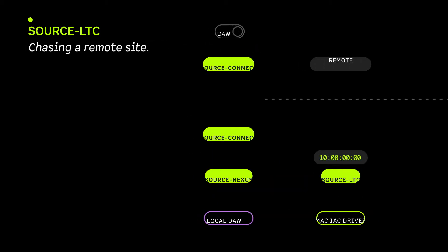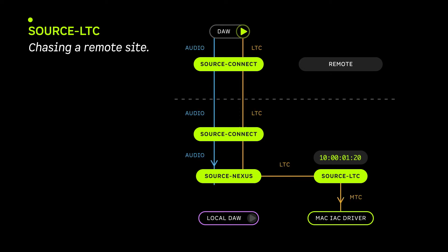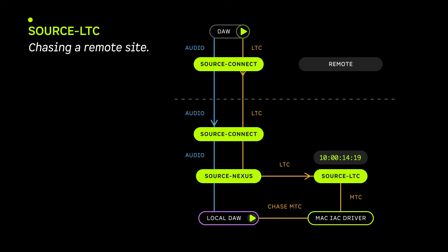If you want to timecode slave to a remote end, ask your remote end to send LTC to one leg of a stereo or multichannel Source Connect session. Feed the timecode to an audio driver like Source Nexus and feed that into Source LTC. Source LTC then generates MTC that can be sent to the IAC MIDI input of the DAW to chase.